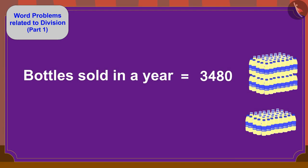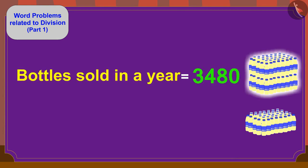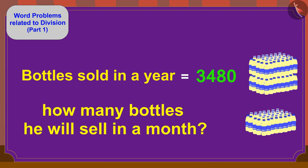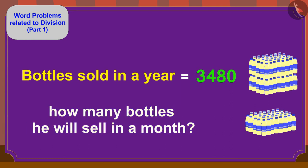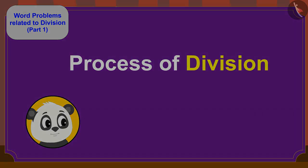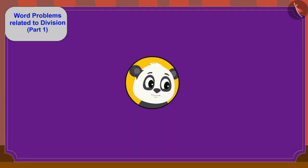Children, can you help Golu? If Golu sells 3480 masala milk bottles in a year, what process will we have to use to find out how many bottles he will sell in a month? That's correct! The process of division. Let us solve it together.